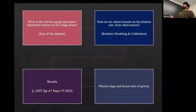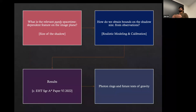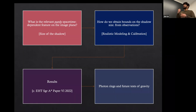The outline for the remaining talk is: first I'll tell you what the relevant observable for black hole imaging is, which is the size of the shadow on the image plane. Then we'll talk about how we can get constraints on the shadow size and therefore test spacetime. I'll describe the results we get and look to the future.